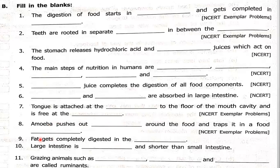Next question: food gets completely digested in the small intestine. And: the large intestine is DASH and DASH than the small intestine. The large intestine is wider — it is broader — but length-wise it is shorter than the small intestine. So the answers are wider and shorter.